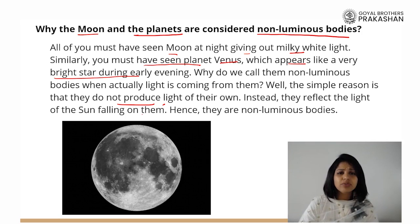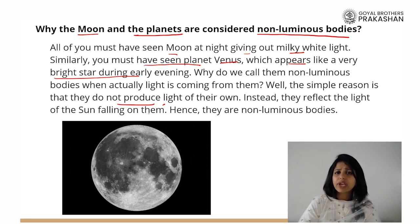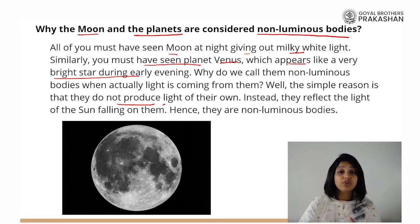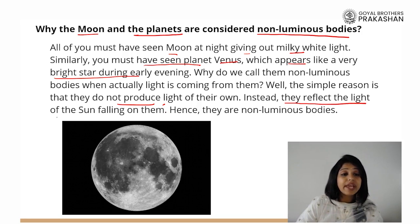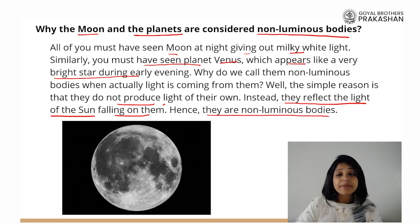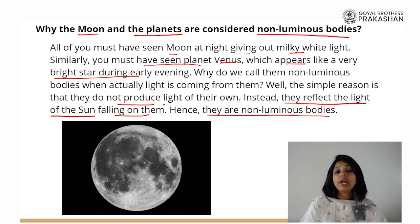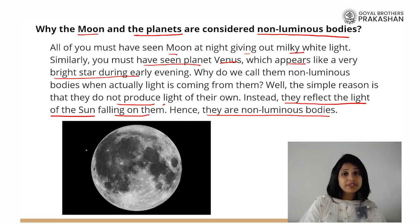But then the question again — how come they are shining in the night sky if they are not having their own light? When the light from a luminous object falls on a non-luminous object, we are able to see that object. Similarly, the moon and the planets reflect the light of the sun falling on them, which makes them appear shining in the night sky. But in reality, they do not have their own light — they are non-luminous bodies.